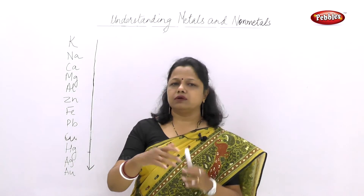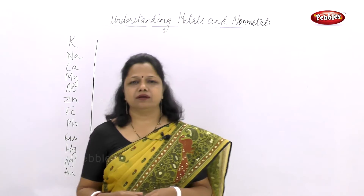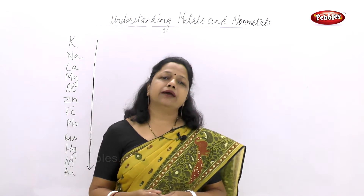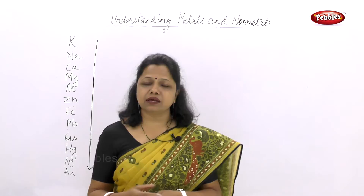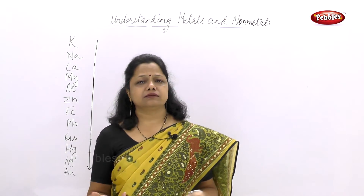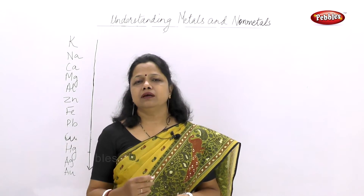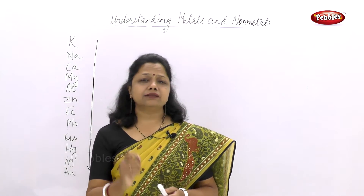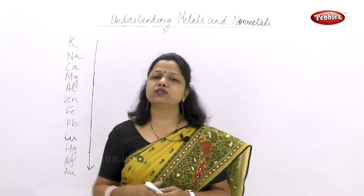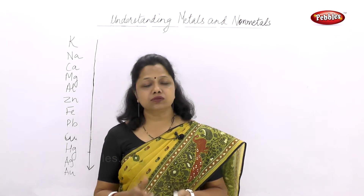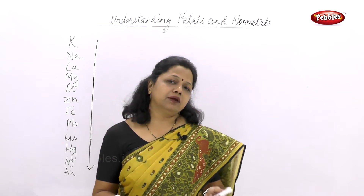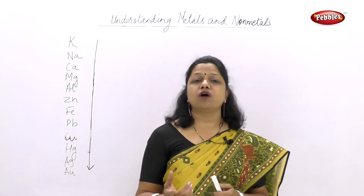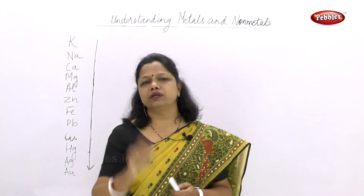Let's take the example of iron, which is used enormously everywhere. Iron bridges are there, iron articles are there, iron machinery is there. Do they remain like that? No. We see they get corroded. Iron has the ability to react with moisture present in the air and also with oxygen of the air, and they form a product which is brown in colour.